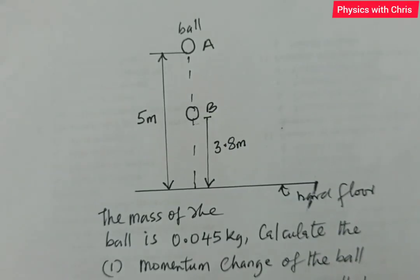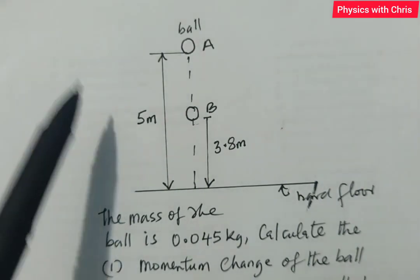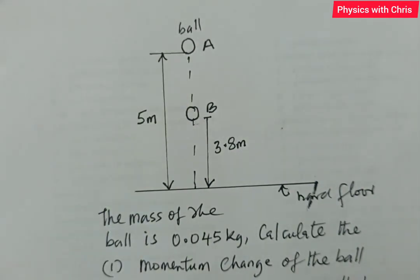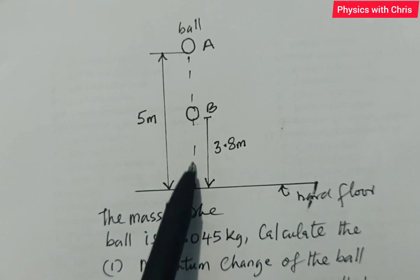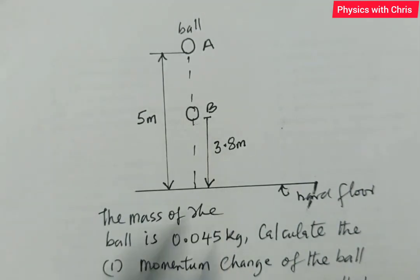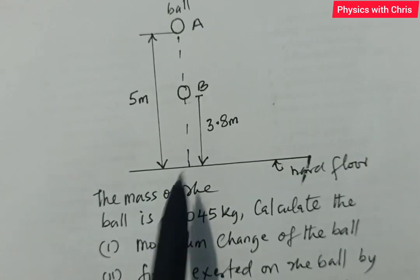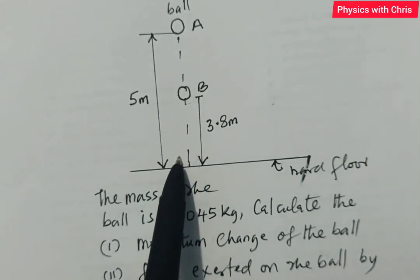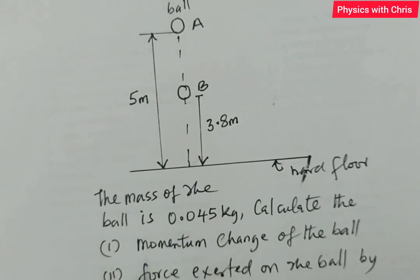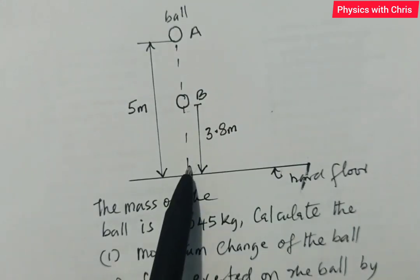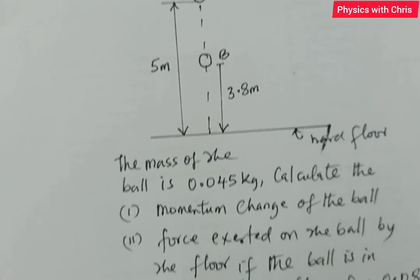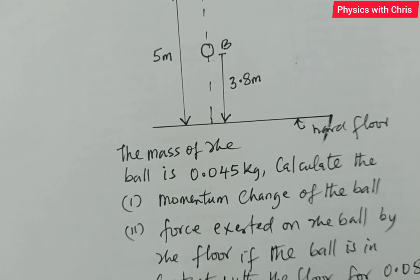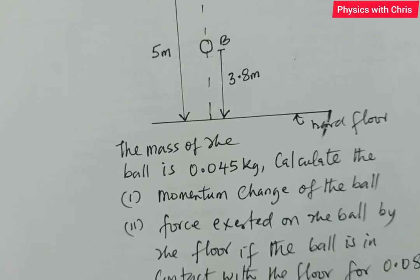Let's look at this case of deductions from Newton's second law of motion. A ball at point A is dropped from rest at a height of five meters above the ground. The ball falls and rebounds to a height of 3.8 meters. At the point where the ball hits the ground and rebounds, the momentum changes. What is the momentum change of this ball when it hits and rebounds? And what is the force exerted on the ball by the floor if the ball is in contact with the floor for 0.08 seconds?